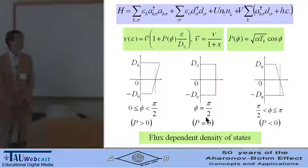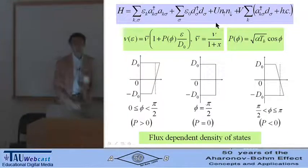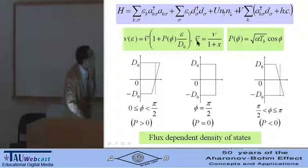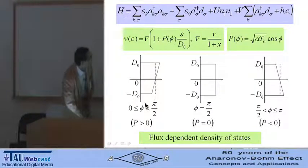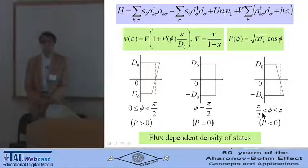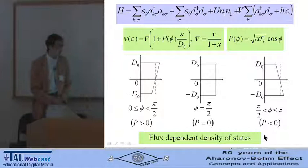The reduced model is described by the conventional impurity Anderson model. But the density of state in the lead is complicated, depending on the magnetic flux. This is the density of state when phi is smaller than half of pi. The density of states is like that when the Aharonov-Bohm phase is larger than half of pi. All the information of the interference effect in the Aharonov-Bohm ring is involved in this magnetic flux dependence of the density of states.